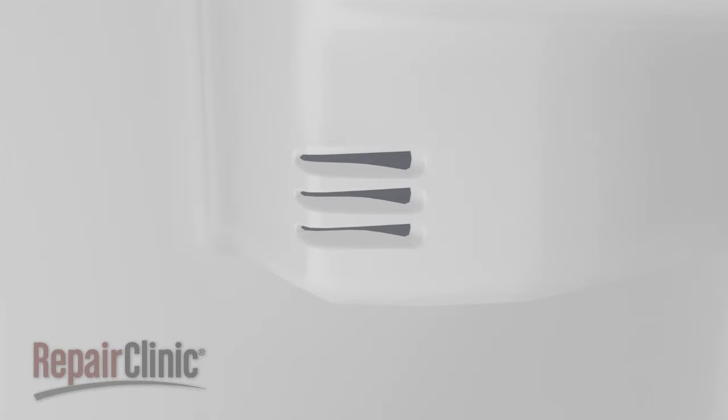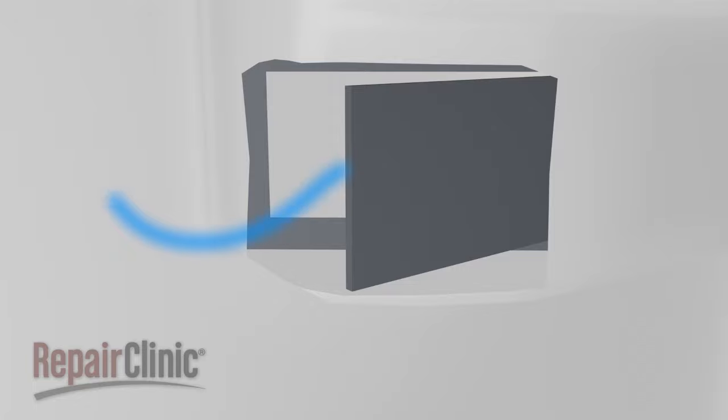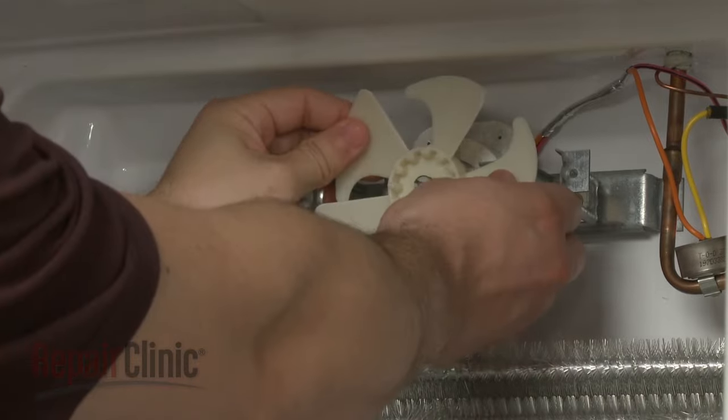If the food or beverages in the refrigerator compartment start to freeze, the damper door could be stuck open. If the refrigerator will not cool properly, but the freezer appears to be working, the door could be stuck closed, or the evaporator fan may have failed and will need to be replaced.